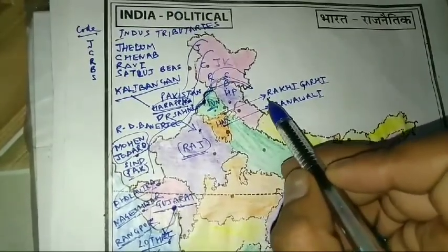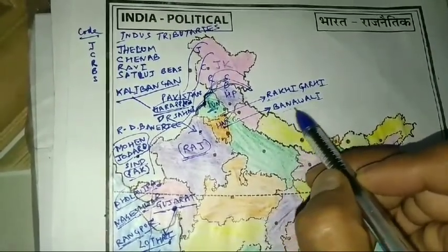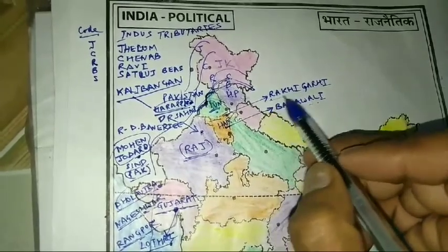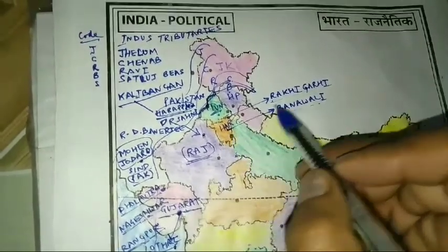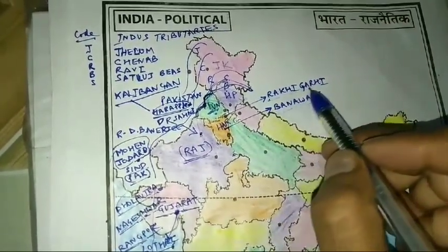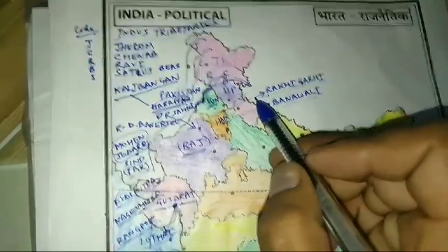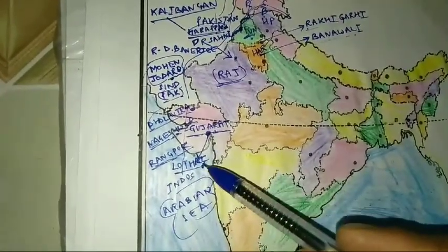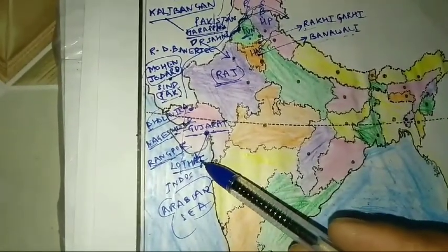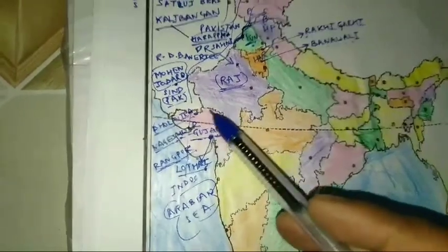Two major Indian cities of Harappan civilization are in Haryana: Rakhigarhi and Banwali. You have to locate them in this area. Moving on to the Gujarat area, here you can find the port town Lothal and Dholavira.